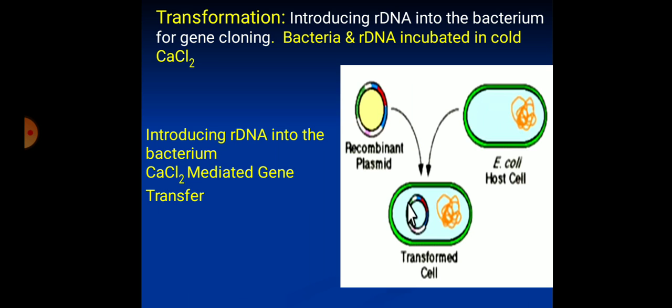The next step is transformation — introducing the R-DNA into the bacterium or host cell for gene cloning or for making the gene of interest express in that host cell. The bacteria and R-DNA molecules are incubated in cold calcium chloride solution for 12 hours, then the temperature is raised suddenly to 42°C so that the permeability of the bacterial plasma membrane changes and the recombinant DNA enters the cell. The bacteria that have taken up the new genes are called transformed bacteria.